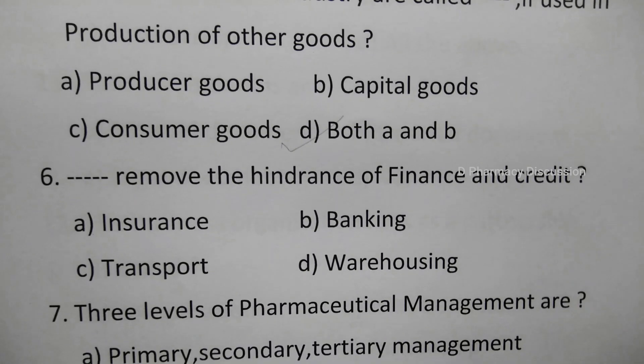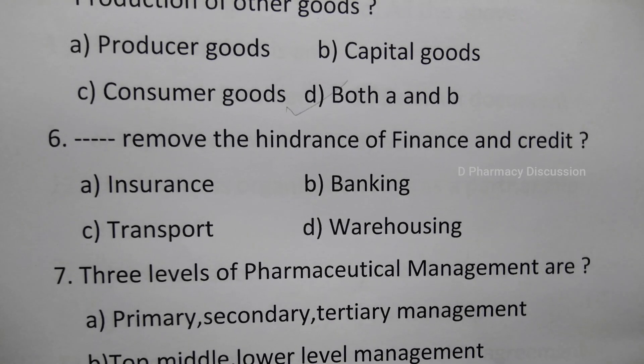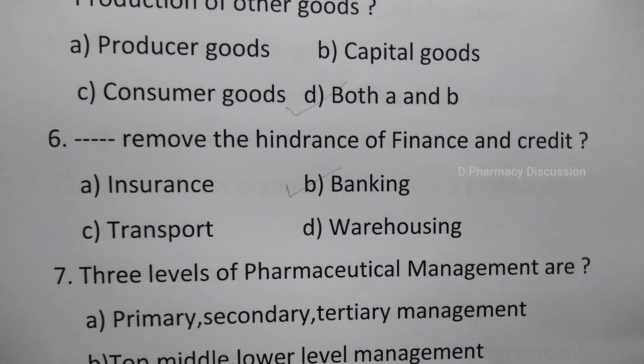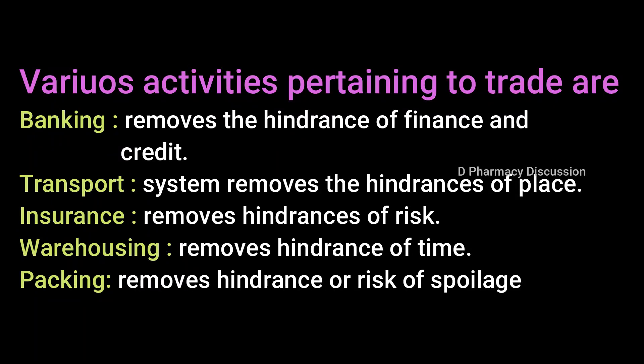Question 6: What removes the hindrance of finance and credit? Option A: insurance, B: banking, C: transport, D: warehousing. Banking removes the hindrance of finance and credit. Transport removes the hindrance of place, insurance removes the hindrance of risk, warehousing removes the hindrance of time, and packing removes the hindrance of risk of spoilage.